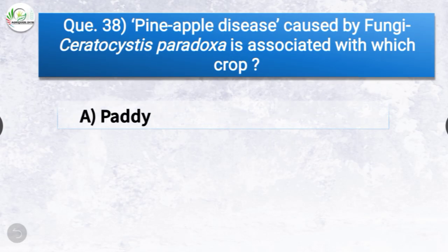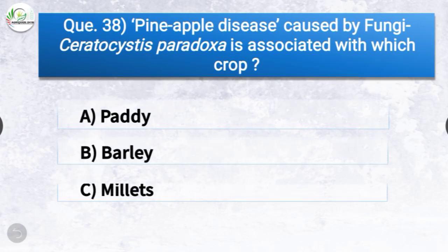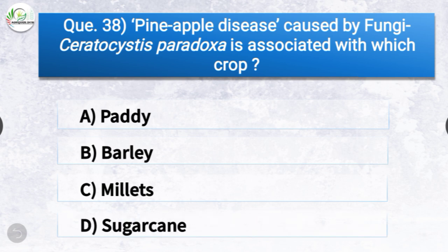Question number thirty-eight: Pineapple disease caused by fungi Ceratocystis paradoxa is associated with which crop? The options are paddy, barley, millet, or sugarcane. The correct answer is option D, sugarcane. Pineapple disease caused by fungi Ceratocystis paradoxa is associated with sugarcane crop.